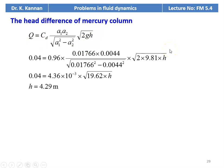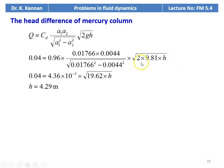We are given the discharge and need to calculate the head difference H. Discharge equals 0.04 cubic meters per second, CD is 0.96. Substituting: 0.04 = 0.96 × (0.01766 × 0.0044) ÷ √(0.01766² − 0.0044²) × √(2 × 9.81 × H). Left-hand side is 0.04; calculating the numerical values gives 4.36 × 10⁻³ × √(19.62 × H). Solving, H equals 4.29 meters.